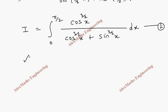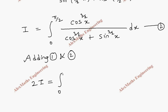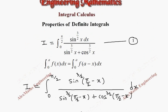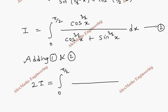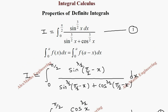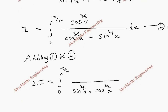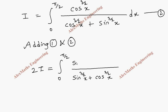Let's call the original integral equation 1 and this new result equation 2. We are going to add both. Adding 1 and 2, on the left side we get I plus I which is 2I. On the right side, both have the same integral limits from 0 to π/2 and the same denominator sin^(3/2)(x) plus cos^(3/2)(x). In the numerator, equation 1 has sin^(3/2)(x) and equation 2 has cos^(3/2)(x), so we combine them.